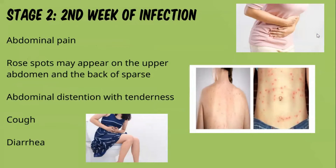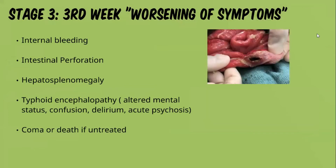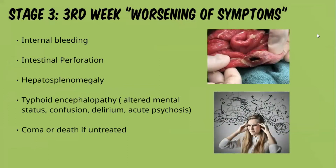In the third week of infection, also known as the worsening of symptoms, these include intestinal bleeding and perforation due to the proliferation of bacteria to the gut mucosa. We also see enlargement of the liver and spleen. Additionally, typhoid encephalopathy may occur, which causes altered mental status, confusion, delirium, active psychosis, and in severe cases, coma.